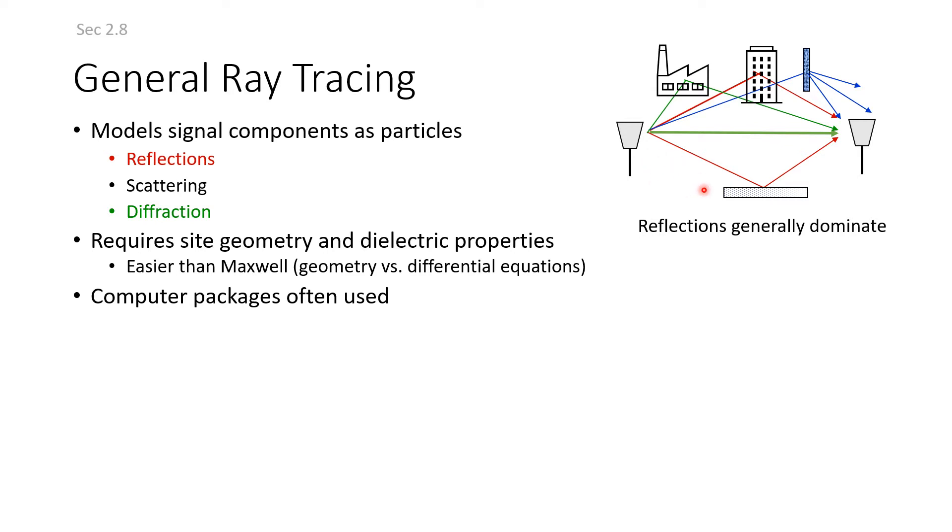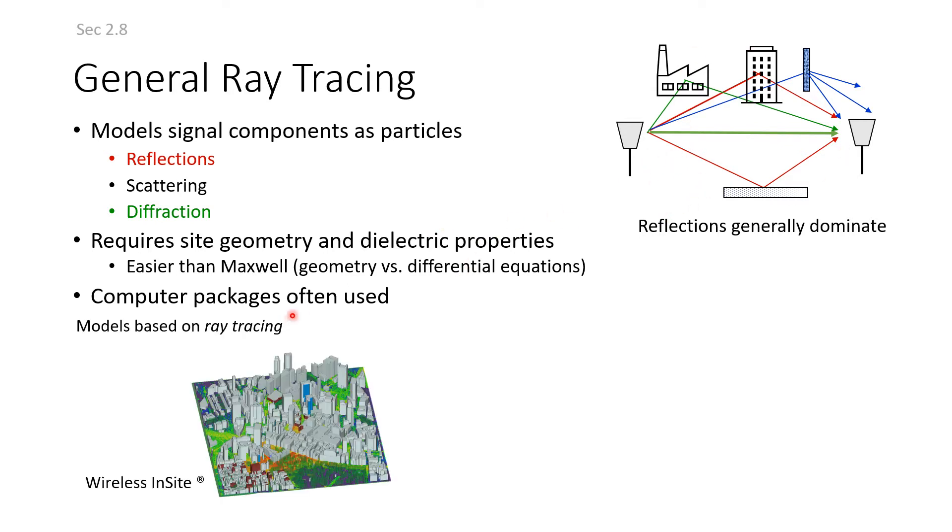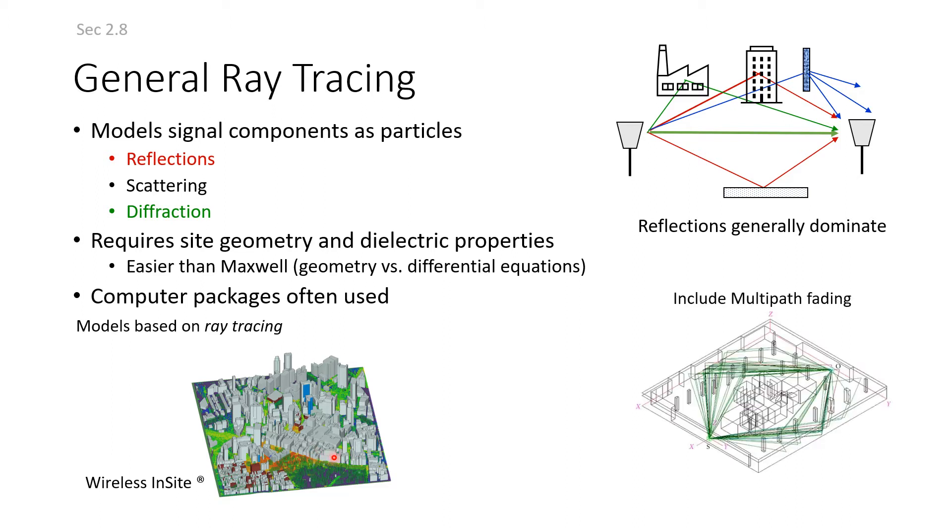We have computer packages where we draw the geometry and insert objects. Wireless InSite is one example which models ray tracing, indoor or outdoor. Companies provide 3D maps. This software can include multipath fading. This is the meaning of ray tracing where you trace the rays between transmitter and receiver. For more, read section 2.8 in our main reference.